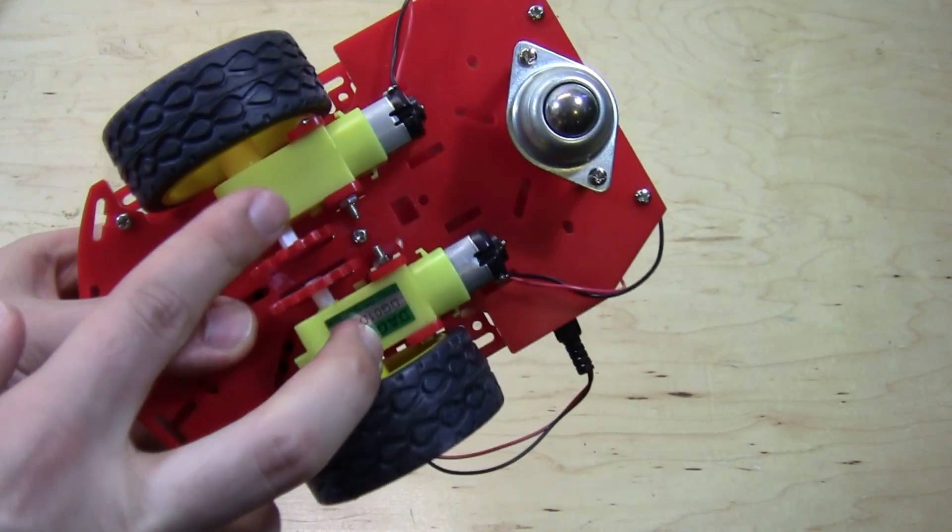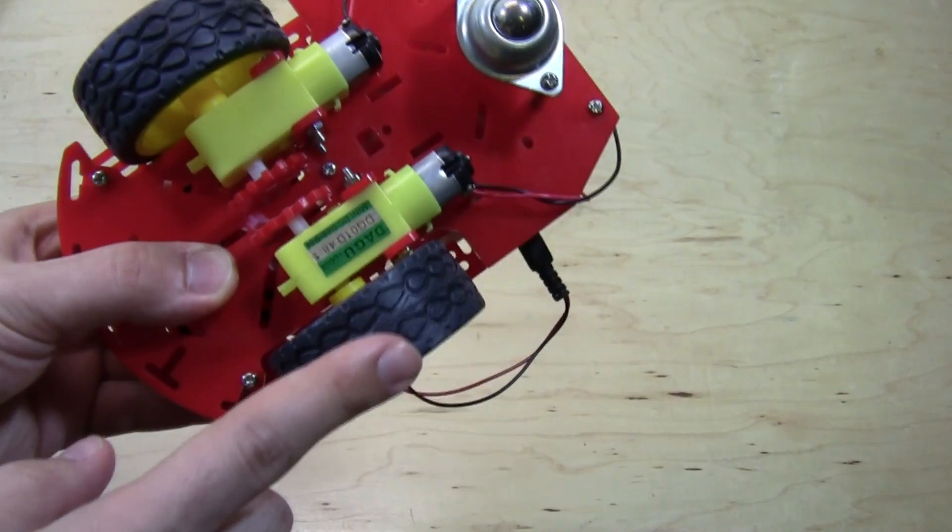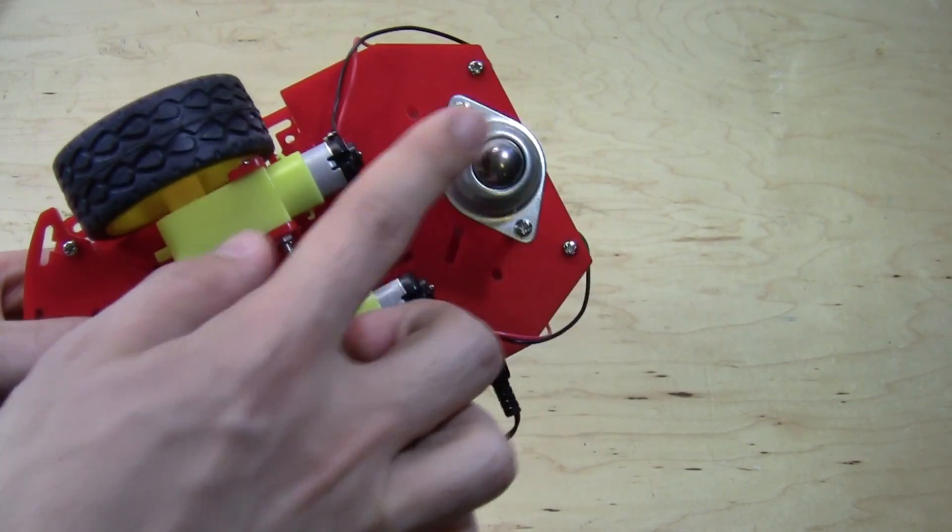On the bottom of the robot, we have two motors that drive the robot's wheels and a third wheel that helps keep the robot stable.